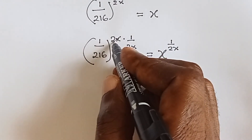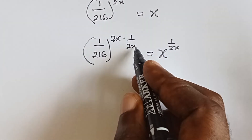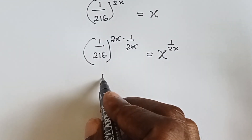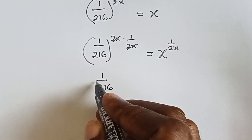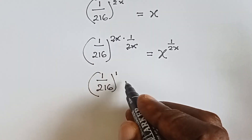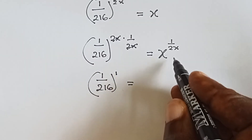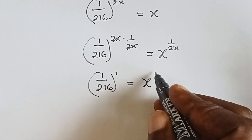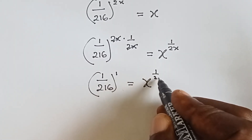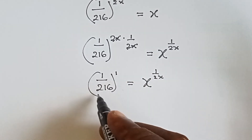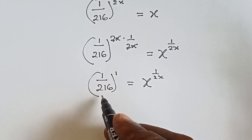The 2x cancels out the 2x. We have 1 over 216 raised to the power 1, and then we have x raised to the power 1 over 2x.